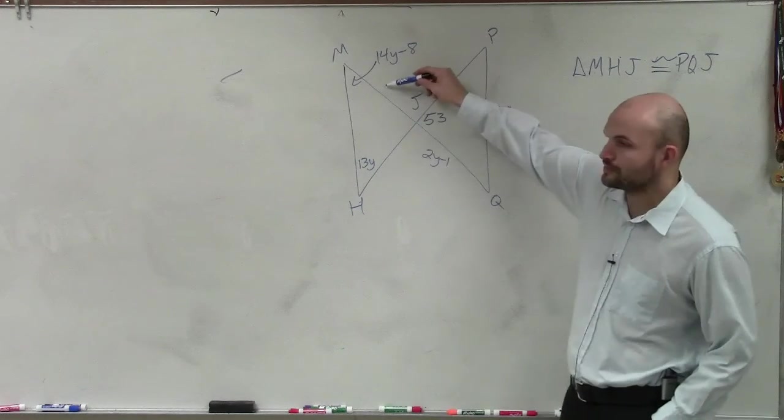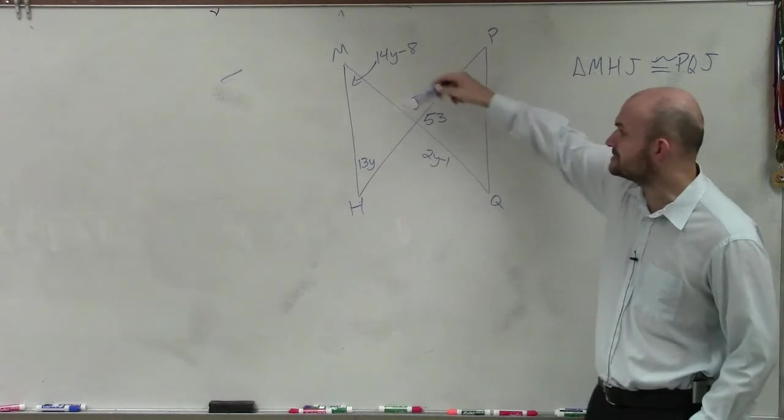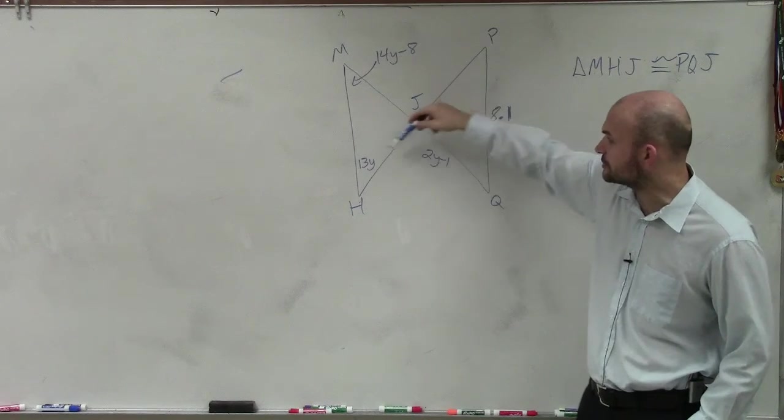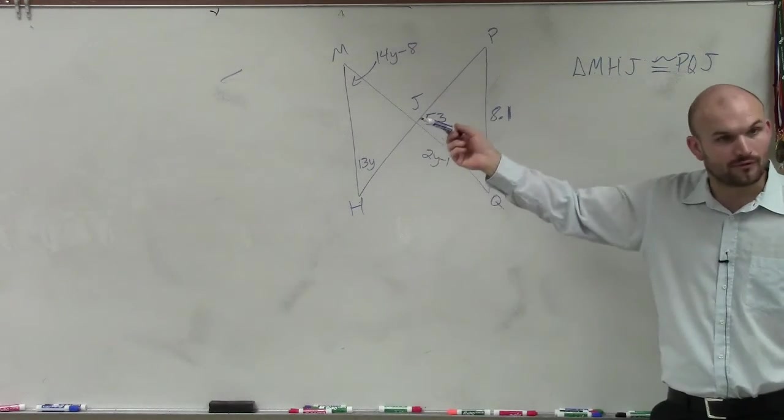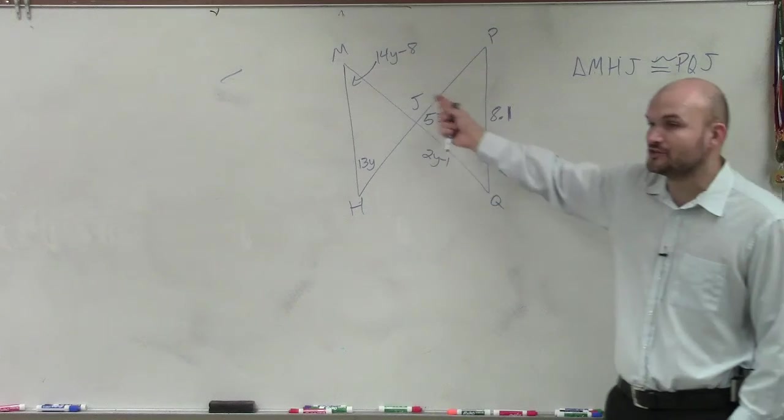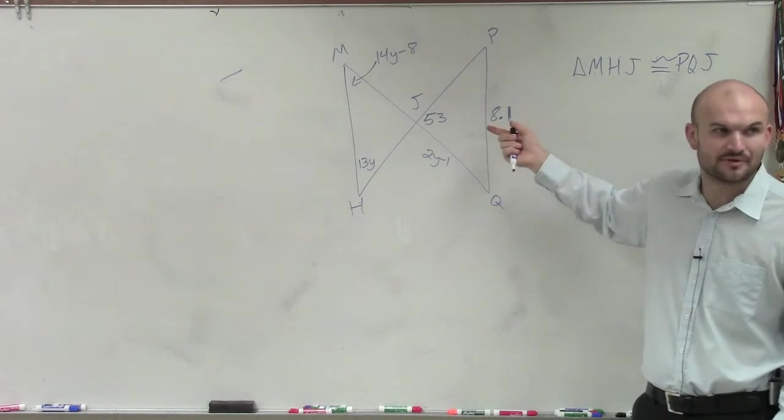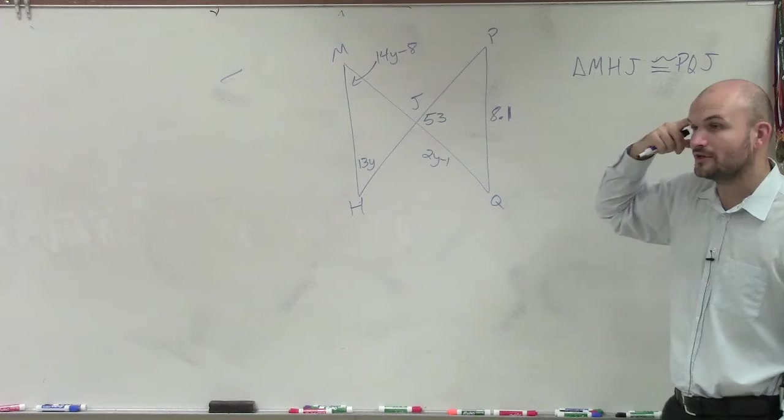Well, if I had a side length over here, I could say that these two sides are congruent to each other and then I could solve for y. But I don't have any other side length except for 8.1, and that's not really going to help me out.